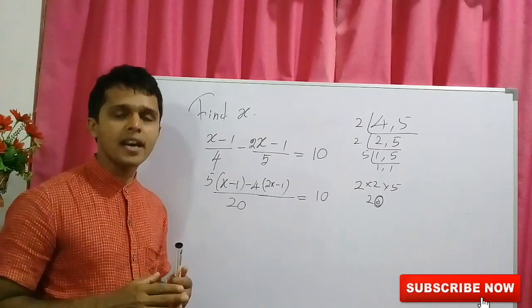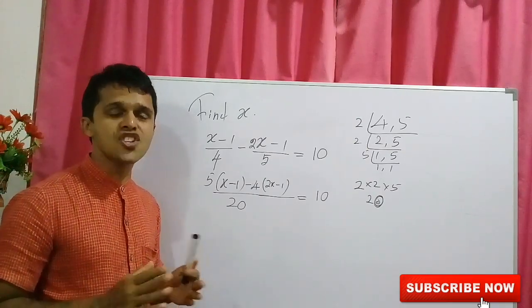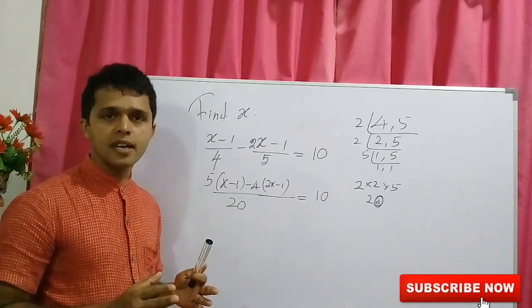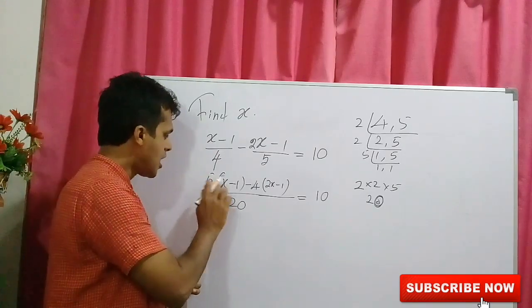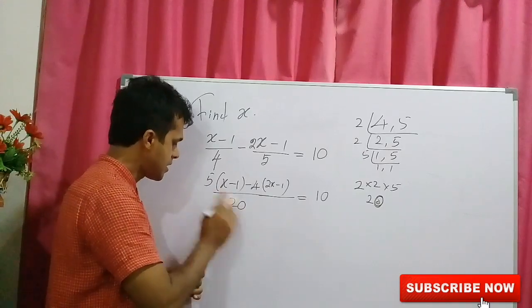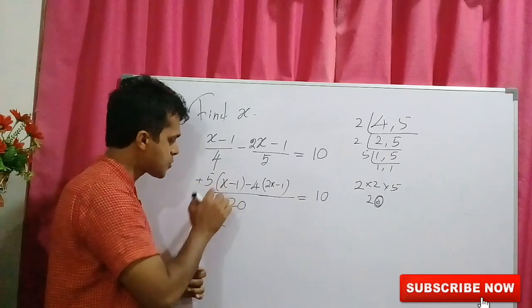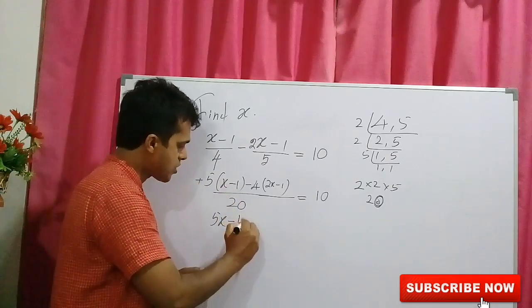Negative 4 times 2x minus 1 equals to 10. Now, you could see 2 brackets, which are in the numerator. Now, remove the brackets. 5 times x is 5x. Plus times minus is minus. 5 times 1 is 5.